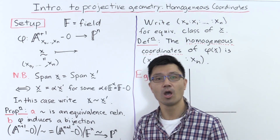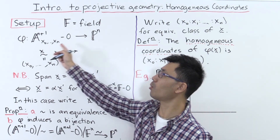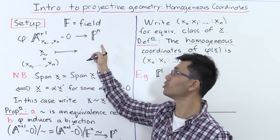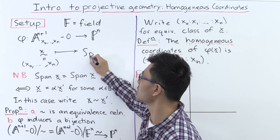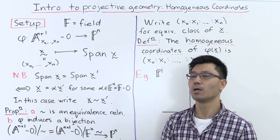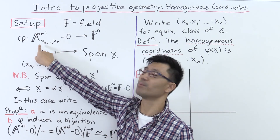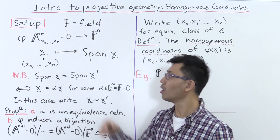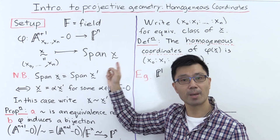Given such a vector, we can identify it with the one-dimensional subspace it spans. So we'll construct a map φ from affine n+1 space minus zero to P^n by sending a non-zero vector x to span(x) — that one-dimensional subspace. This gives a surjective map, but it's far from being injective, because given any one-dimensional subspace, you can pick lots of different basis vectors for it.